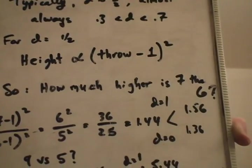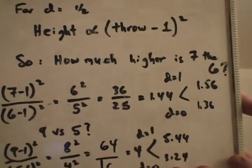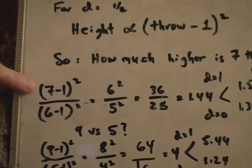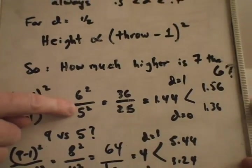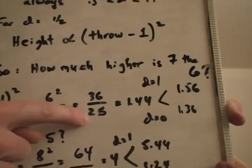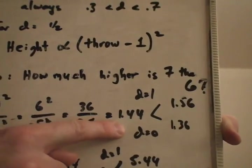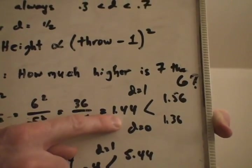So, how much higher is a 7 than a 6? For dwell of one half, it's (7-1)² over (6-1)², which is 6² over 5², which is 36 over 25, which is 1.44. That's the answer. In other words, it's about 44% higher.